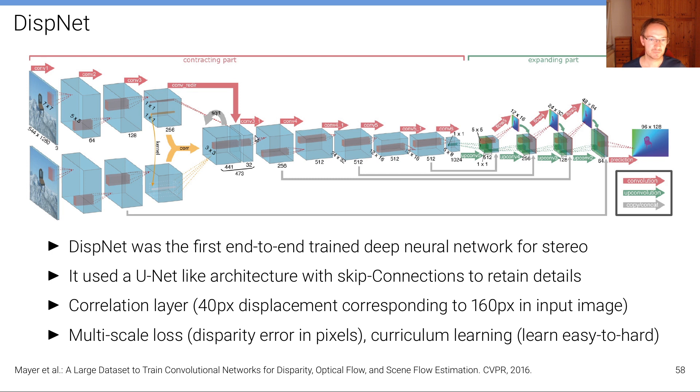One thing that's specific about this architecture is that, and that has also been used by follow-up works, is that after a few convolution and pooling layers, when having reached already a relatively small resolution, there is already some idea about stereo matching incorporated here by having a correlation layer that does something similar to the correlation that's happening also in block matching, but now on this feature level.